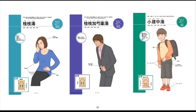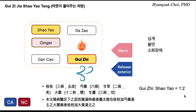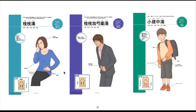Does that make sense? Only the ratio is different, but the primary indication is totally different. Gui-ji-tang is for common cold symptoms; this one is for abdominal pain.